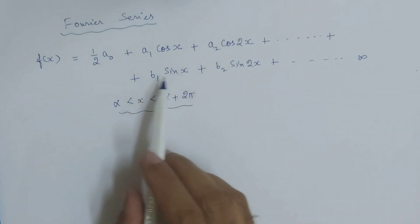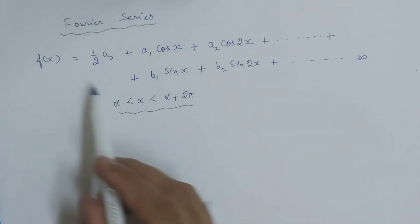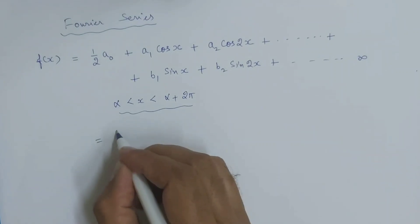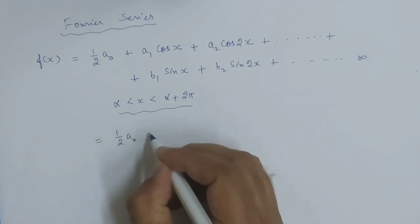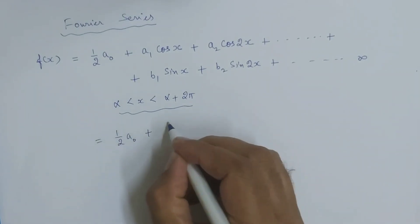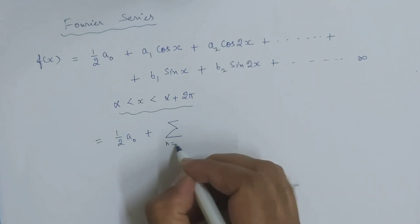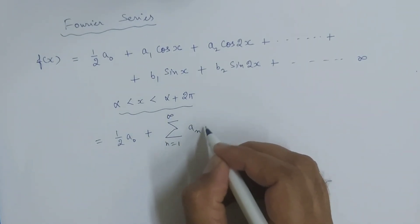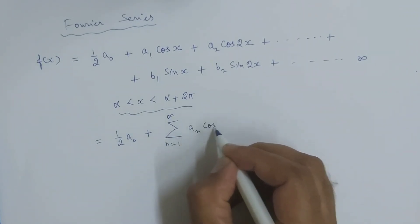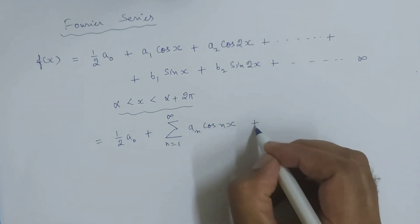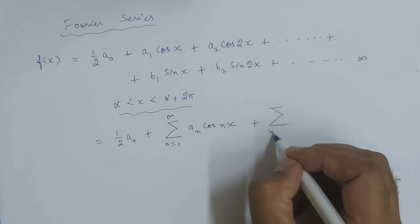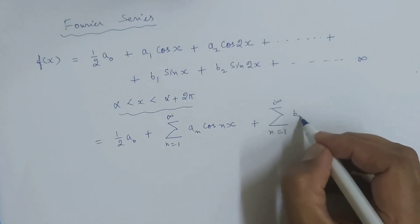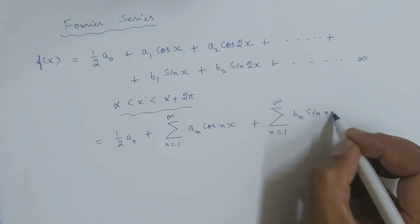Sine and cosines में जो series है, इसको हम Fourier series कहेंगे, and it can be written as (1/2)·a_naught plus sigma n=1 to infinity of a_n·cos(nx) plus sigma n=1 to infinity of b_n·sin(nx).